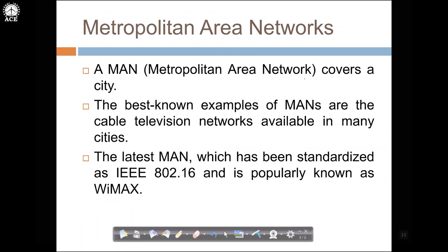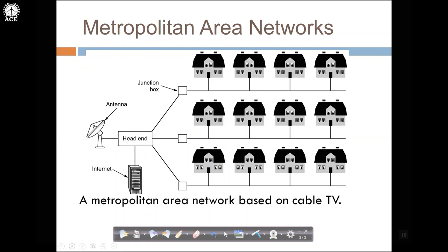Coming to metropolitan area network, MAN covers the entire city. A well-known example of MAN is the cable television network in a city. The latest MAN standardized by IEEE is WiMAX, with standard IEEE 802.16, which spans an entire city. An example shows a head-end connected to the internet, with junction boxes distributing to several localities within the city for cable access — spanning the whole city.